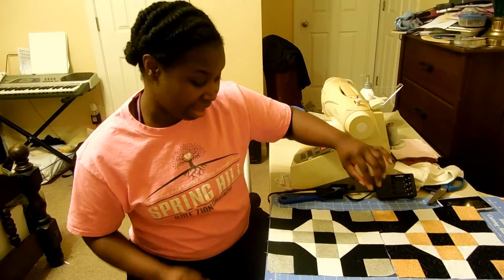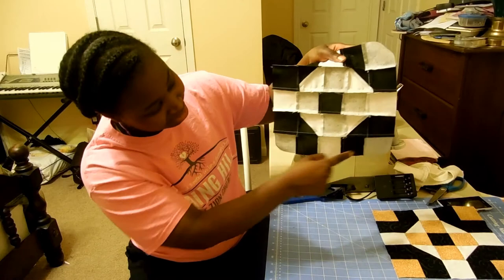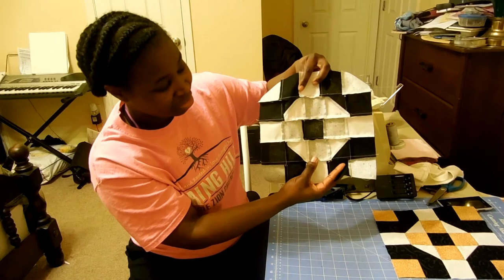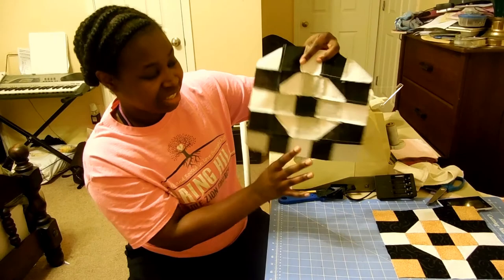the seam allowances all point in one direction. That is so that if there's an issue with them nesting once you put it together, for example, if the other side is going down as well as this side, all we have to do is flip the block. That's going to help them nest because these seams now face up.